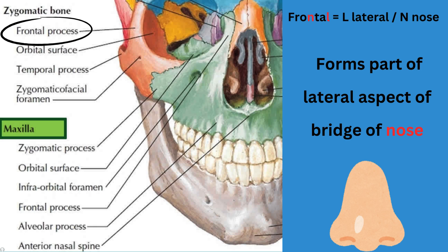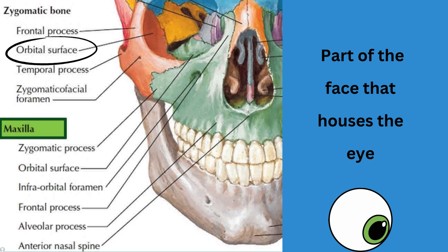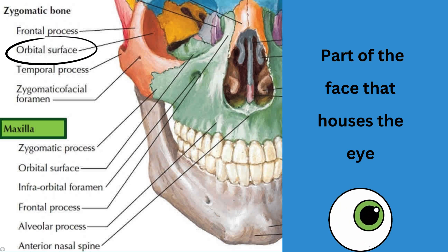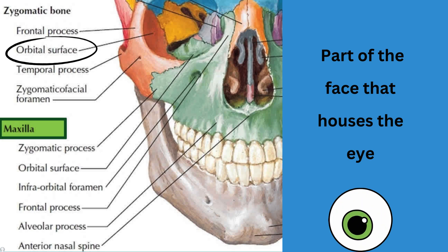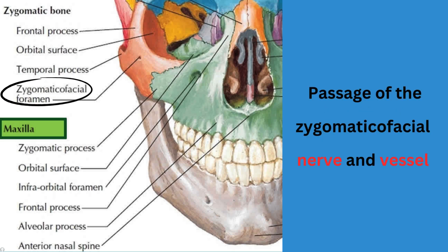The orbital surface — as the name suggests — is part of the face that houses the eye. Orbital equals orbit, which equals eyes. Next is the temporal process, which will form the temporal bone.